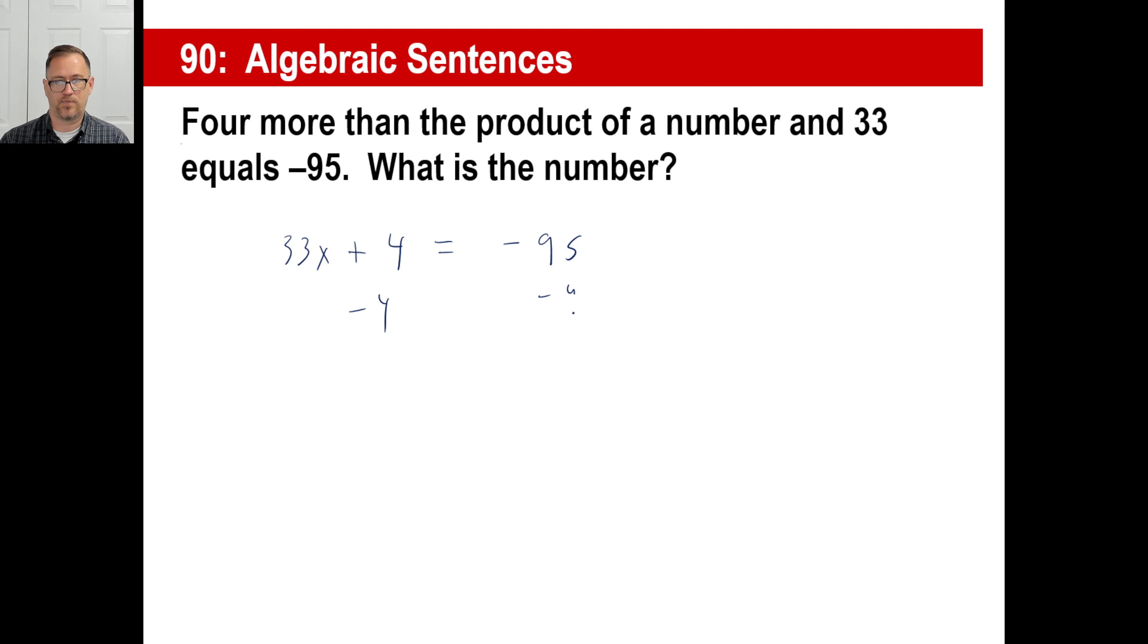So I'm going to subtract four. Subtract four. 33x is equal to negative 95 minus four, negative 99. Don't put negative 91. That's not right. They're both the same sign. So you add the absolute values of the numbers and then you add the negative sign to that.